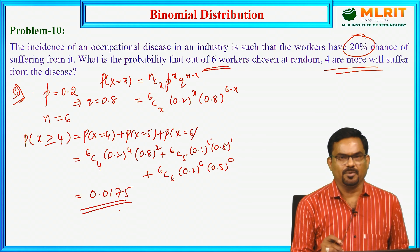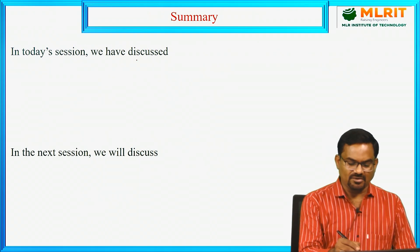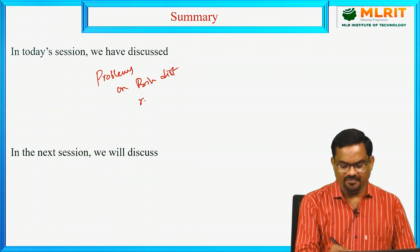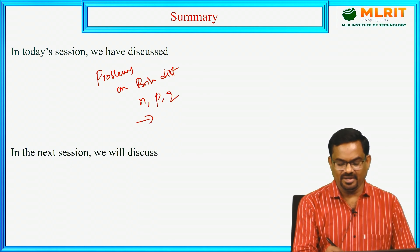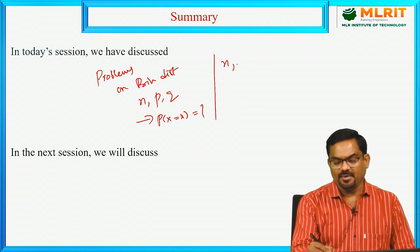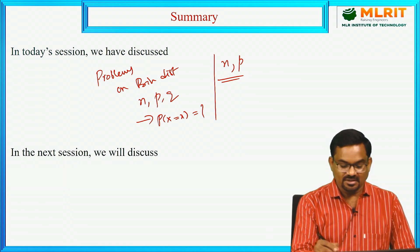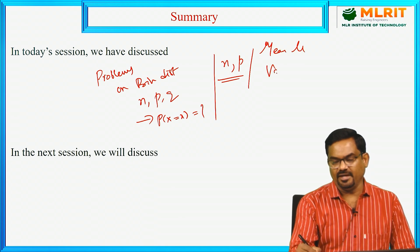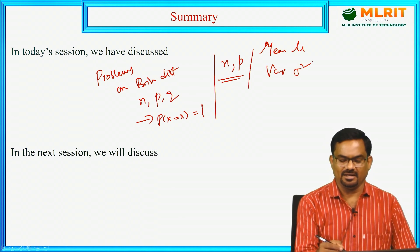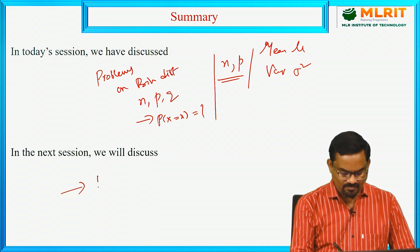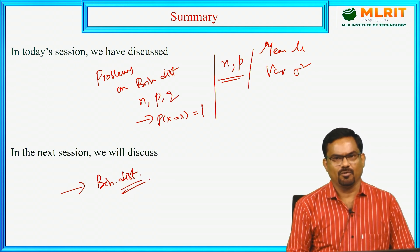So like this we can find probabilities using binomial distribution. In today's session we solved some problems on binomial distribution. If n, p, q are given, we can find the probability of getting x successes. Similarly, if other values are given, we can find the parameters n and p, as well as the mean mu and variance sigma squared. In the next session, we will solve more problems on binomial distribution and deal with different types of problems. Thank you.